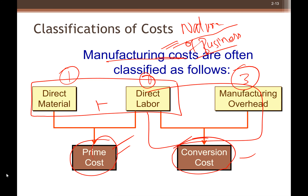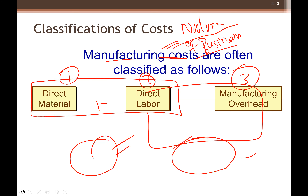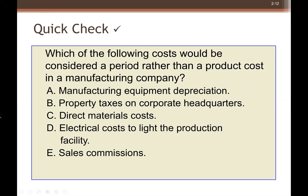These are simply additional classifications of manufacturing cost — not overall cost. Selling and administrative costs still exist. But within manufacturing cost, you can categorize by direct material, direct labor, manufacturing overhead, or alternatively as prime cost and conversion cost, depending on the nature of the business. If you understand this, please answer the quick check question: which of the following costs would be considered a period cost rather than a product cost in a manufacturing company? Please everyone participate.